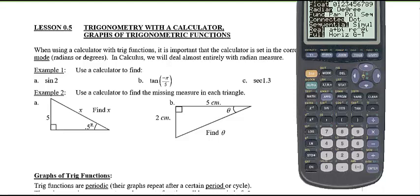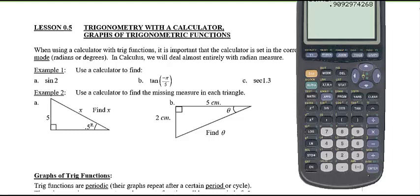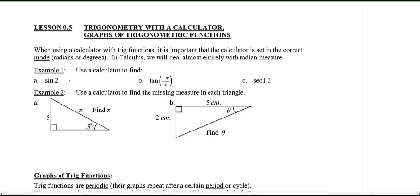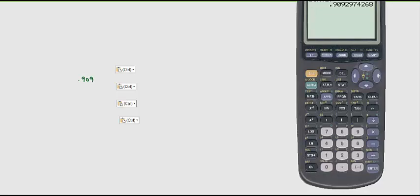Press mode and make sure radians is highlighted — then you're ready. For the first example, it's just punching it into your calculator: what is sine of 2? This 2 represents 2 in radians. Make sure you give three decimal places — get used to doing that, as AP requires three decimal places.